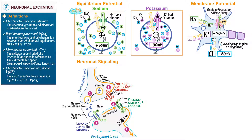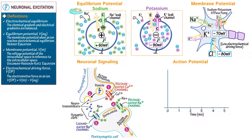Let's take a closer look at action potentials, which are depolarization signals that operate over long distances along an axon. They are all-or-nothing events, like firing a gun. Create a graph with the x-axis labeled as time in milliseconds and the y-axis as membrane potential in millivolts. Mark several specific voltages.